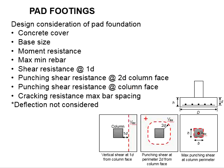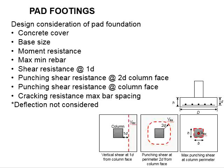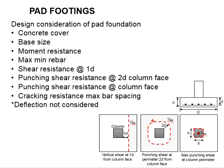Next, you need to check for the shear resistance at 2D distance from the column face. This will form a perimeter around the column at 2D distance. You need to quantify the total shear force of the shaded regions outside the perimeter, divided by the total effective section area of the perimeter. The shear stress needs to be lower than the shear resistance of the section.